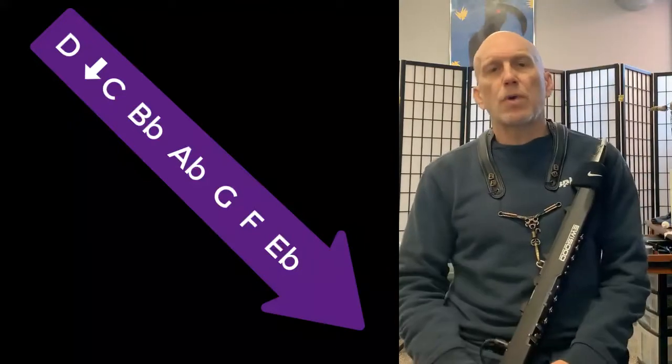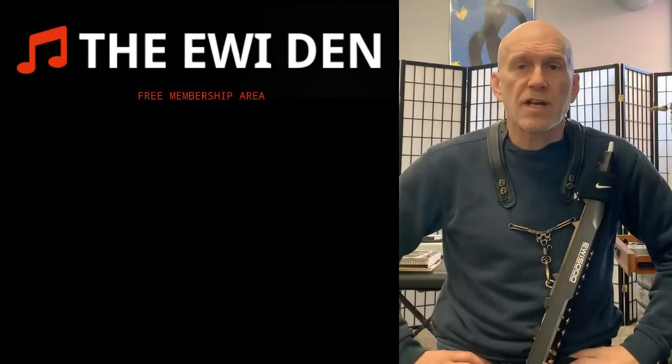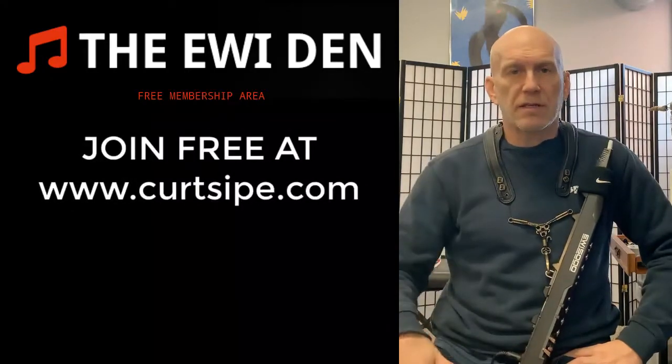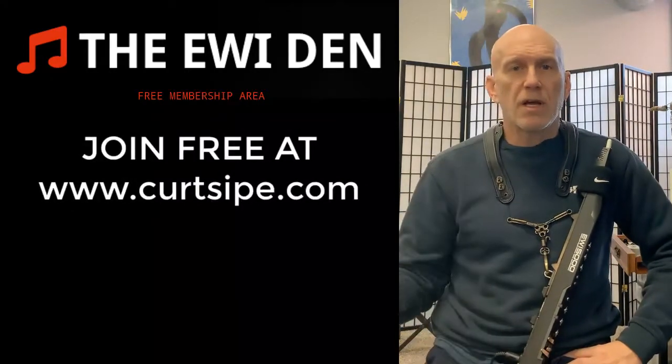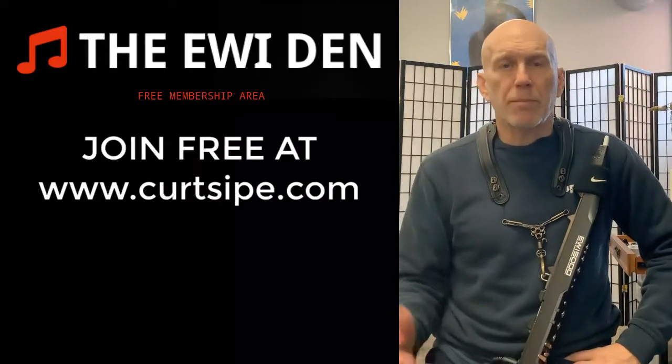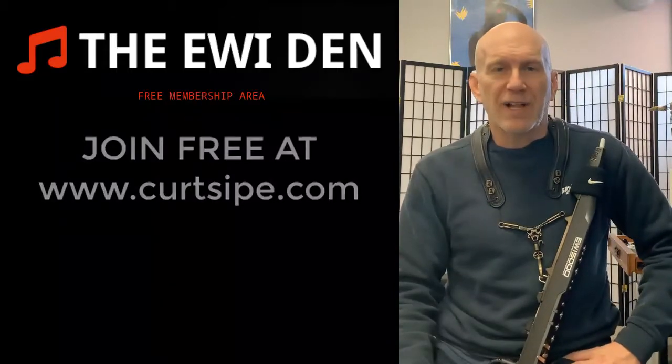And that brings our total up to seven scales, which is great. We only have five more to go. For our improvisation assignment, just scroll down in the Ewi Den in the novice area until you get to the play along tracks and pick any one of the previous missions and apply it to the key of A and then to the key of E flat.